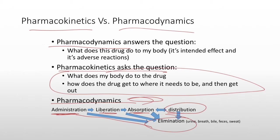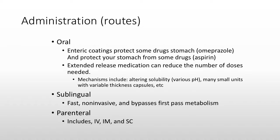There are several routes of administration. I'm just going to quickly go over a few of these and highlight some high-yield things. You can take something orally, you can have something intravenously, you can have it intramuscularly injected. You can put nitroglycerin under your tongue and absorb it. You can take things parenterally, meaning that's the IV administration.